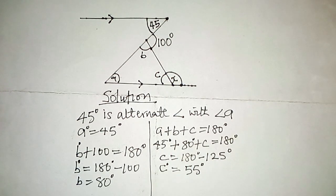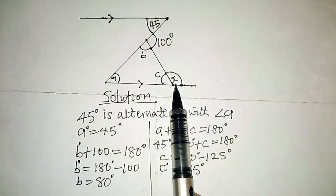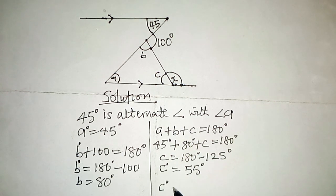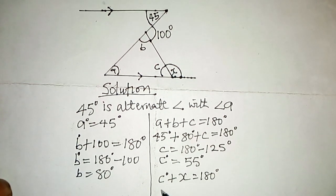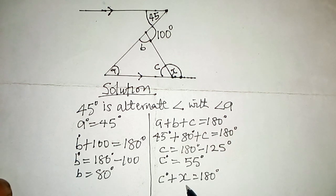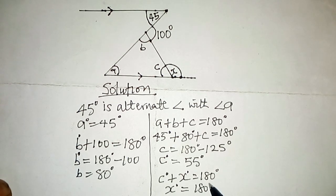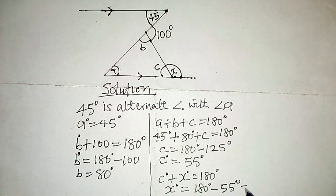Now that we know angle C is 55 degrees, we can find angle X. We know this forms an angle on a straight line, so angle C plus angle X equals 180 degrees. Therefore, angle X equals 180 degrees minus 55 degrees, which means X is equal to 45 degrees.